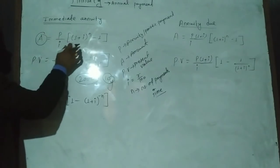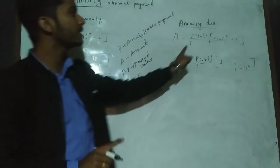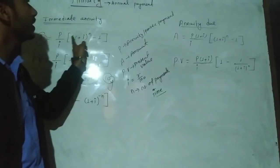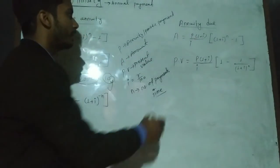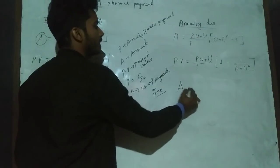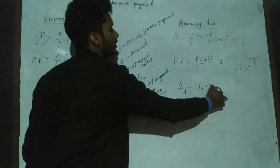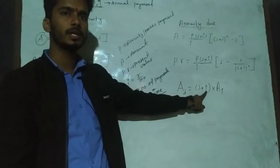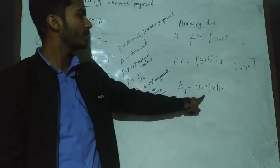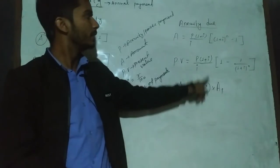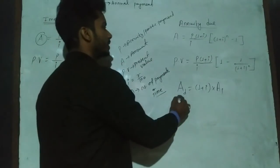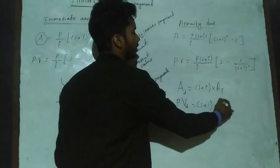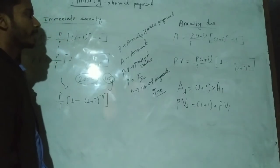For the immediate annuity and the annuity due — the formulas are similar. The annuity due formula is the same as the immediate annuity formula, multiplied by an extra factor of (1 plus i). So: Amount of Annuity Due (Ad) equals (1 plus i) multiplied by Amount of Immediate Annuity. Similarly, Present Value of Annuity Due equals (1 plus i) multiplied by Present Value of Immediate Annuity. These are the key relationships between the two types.